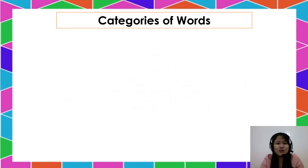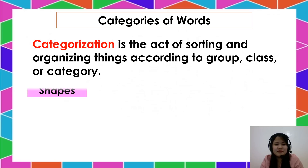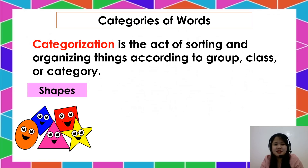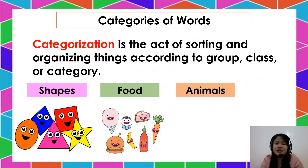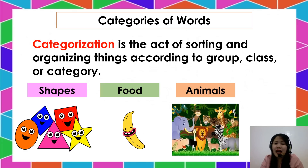Just remember the categories of words. Categorization is the act of sorting and organizing things according to group, class, or category. For example: shapes, food, and animals. We may group things according to shapes, foods, or animals, and other categories.